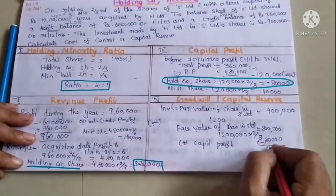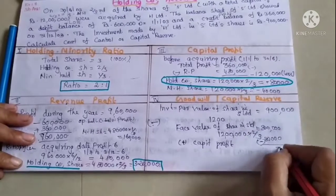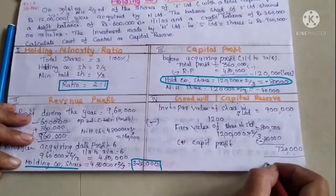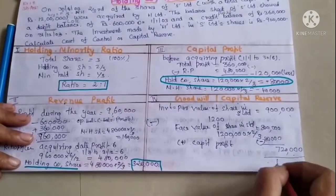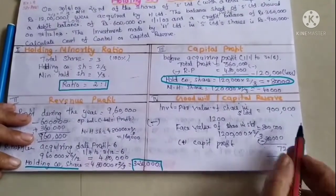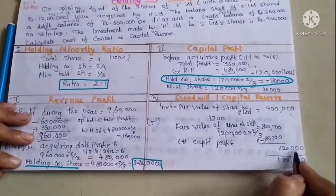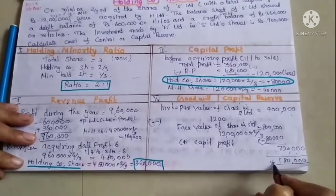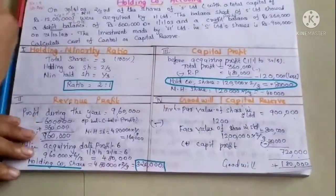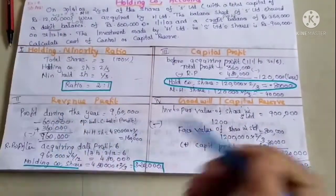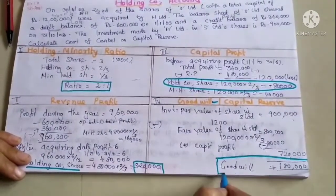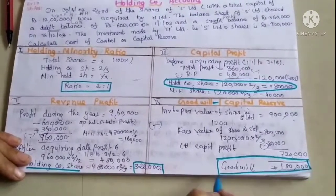After applying the minus figures and plus figures, the result determines whether there is goodwill or capital reserve. Adding back capital profit figures gives the final goodwill or capital reserve answer.